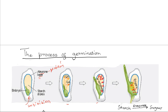The radicle is the first to emerge during germination, through the micropyle. It grows downwards into the soil for anchorage and absorption of water and minerals. The plumule then emerges and grows upward towards light.